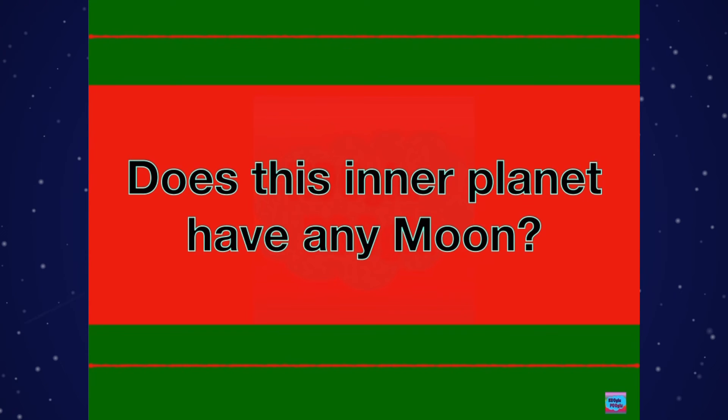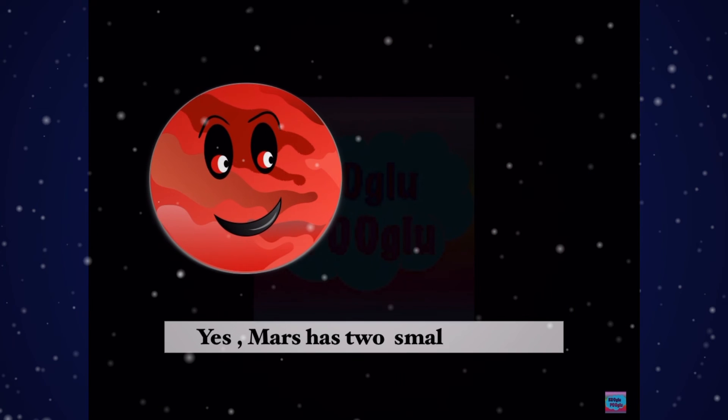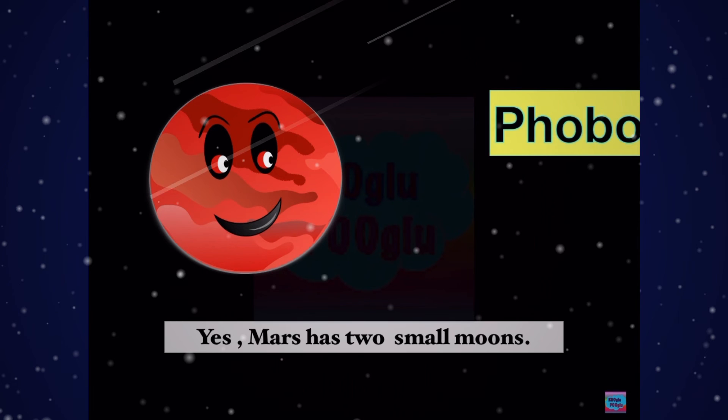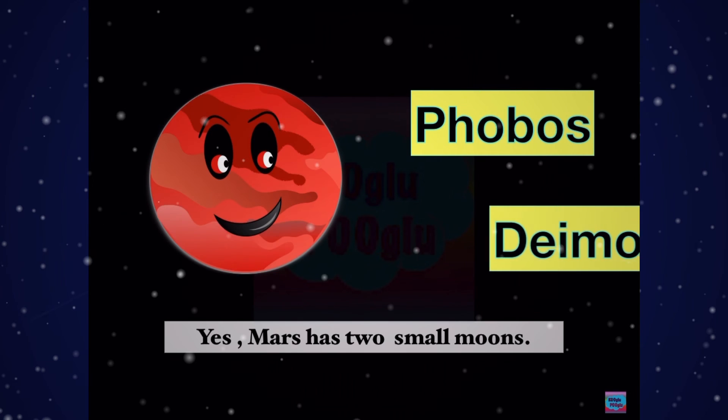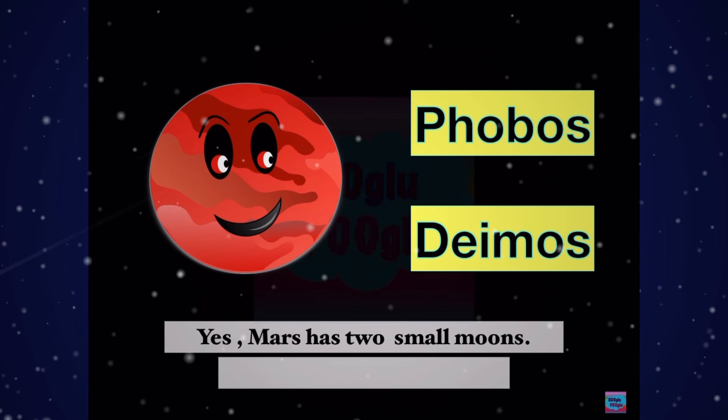Does this inner planet have any moon? Yes, Mars has two small moons, Phobos and Deimos. But Mars has no rings.